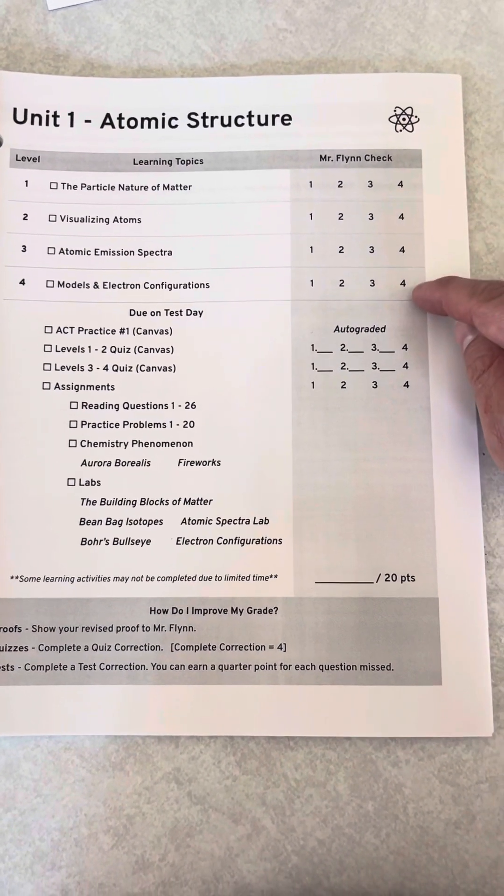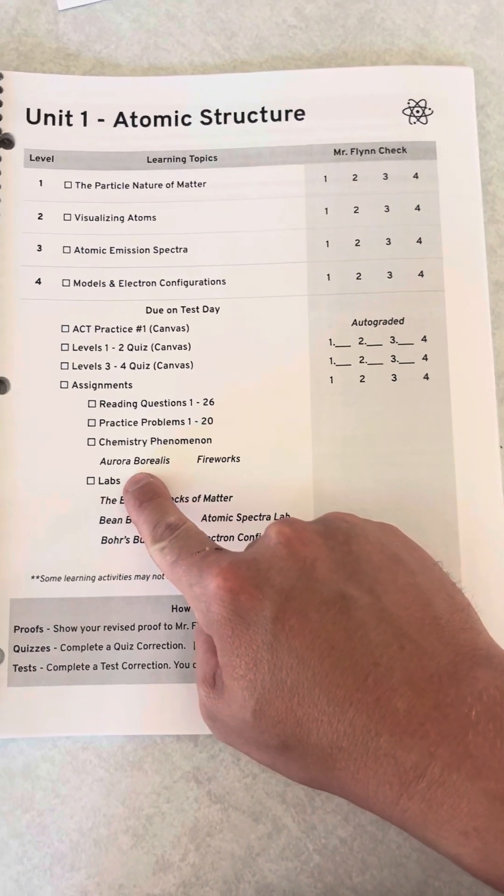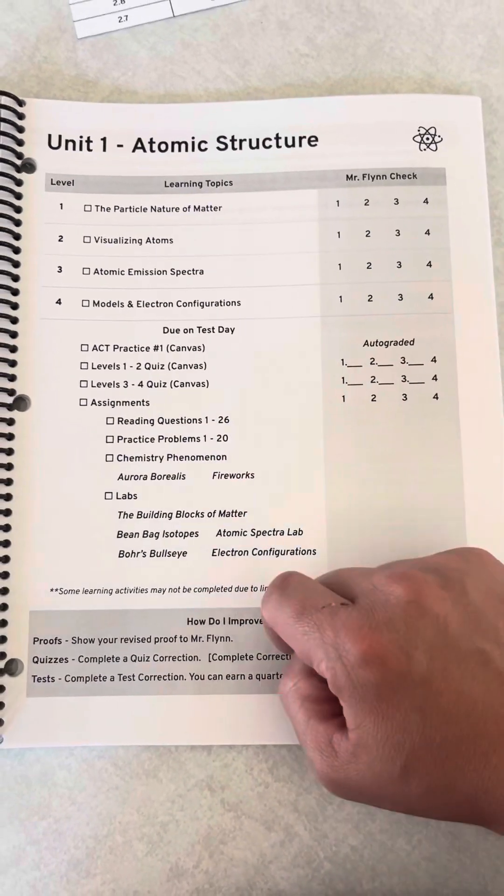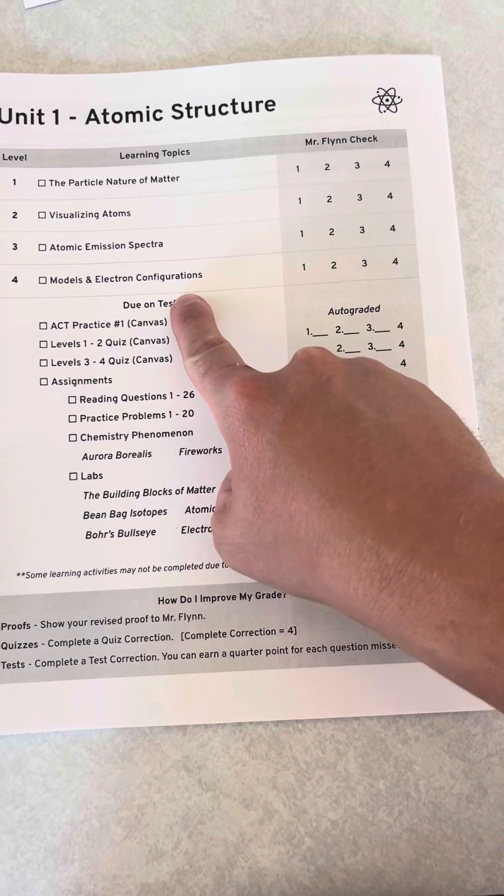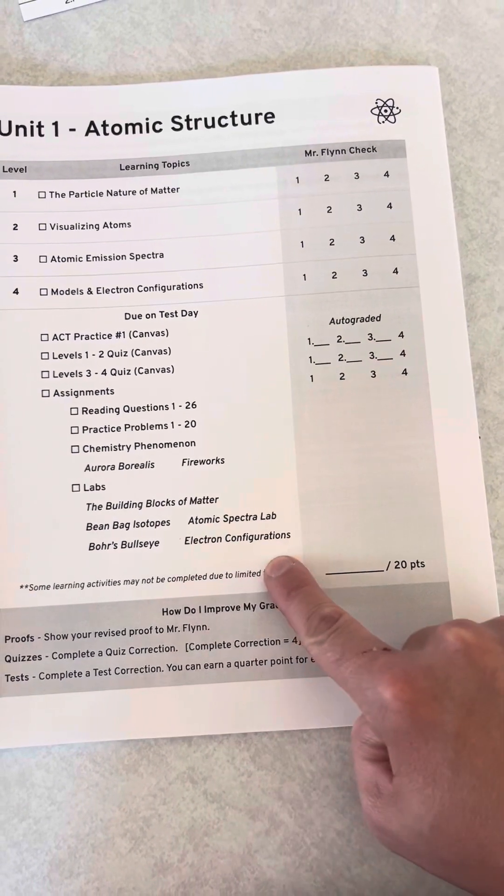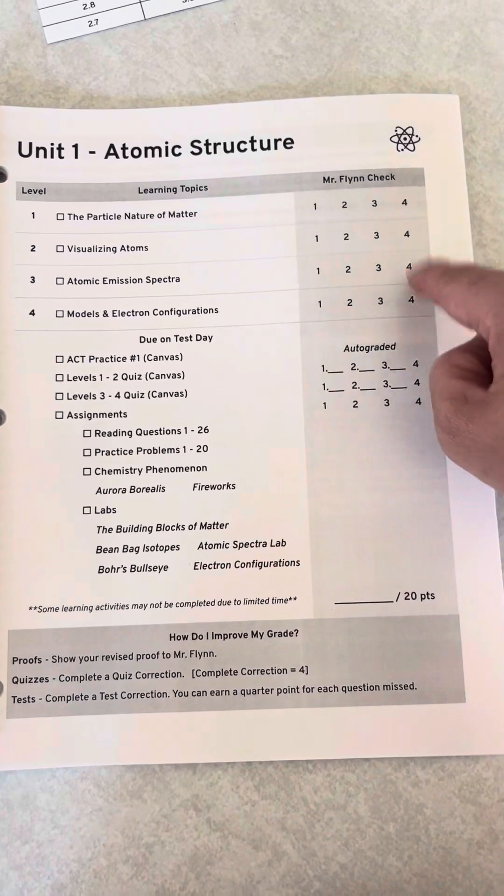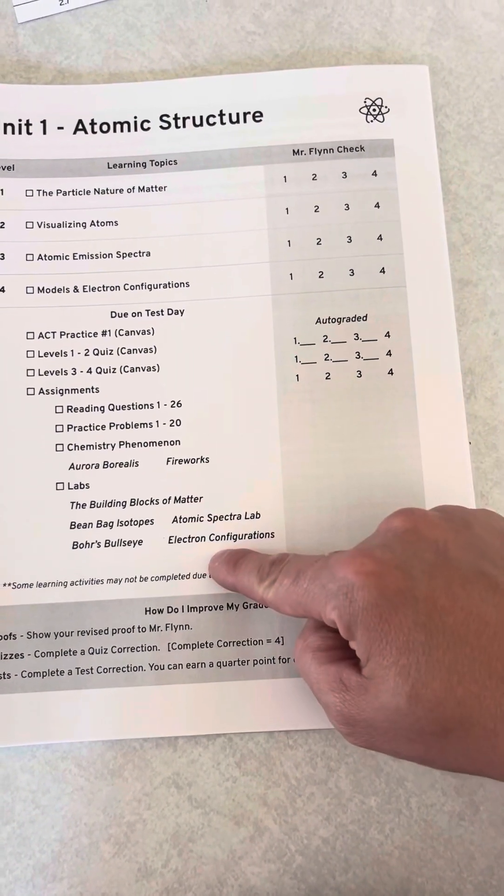Where I'm really getting to the meat of things is up here. I want them to show me that, right? When they talk about emission spectra, I really hope they bring up the phenomena about the auroras or fireworks when they're talking about electrons moving up and down. I hope that when they talk about electron configurations, they use the examples from the lab electron configurations. They're using the information they're learning to apply it to a proof that I am now grading.